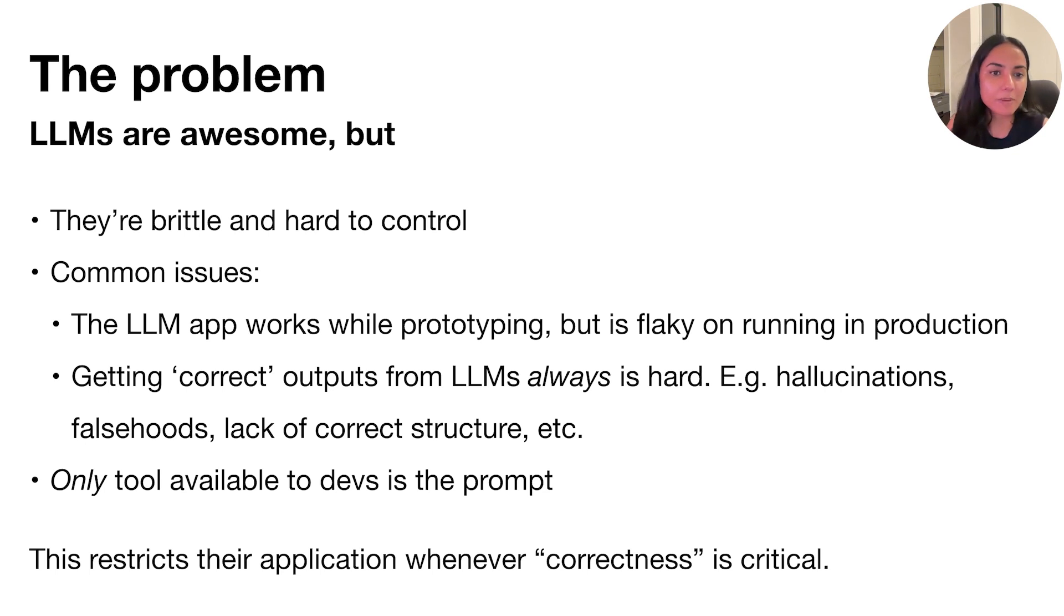Common issues that we might run into as we're building large language model applications are that the LLM app works while prototyping, but it ends up being flaky or doing unexpected behavior when we run it in production. Getting correct outputs from large language models in a very consistent manner is hard, and common examples of incorrect outputs that we may experience are hallucinations, falsehoods, lack of correct structure, etc.